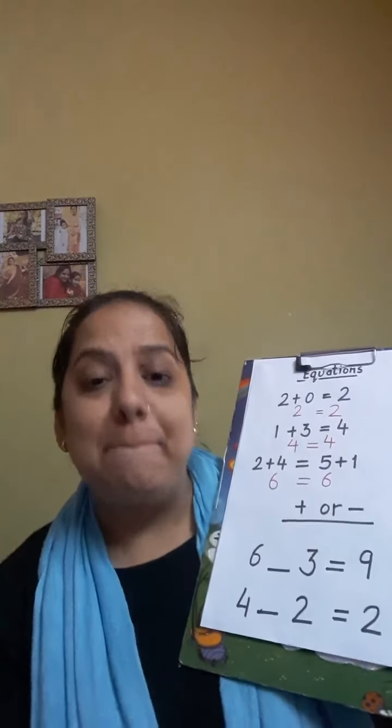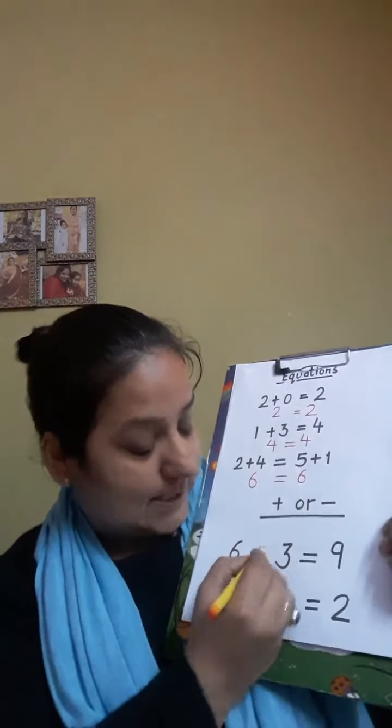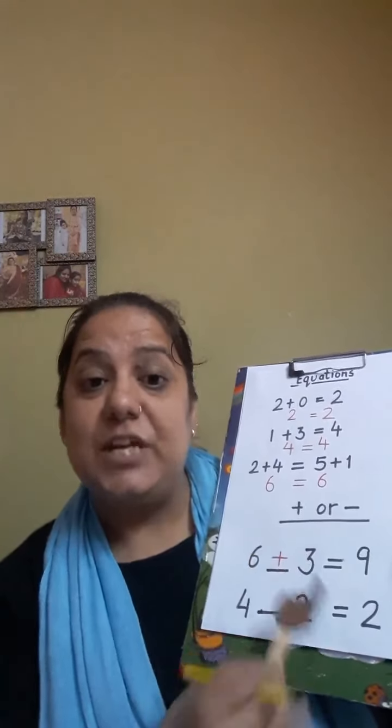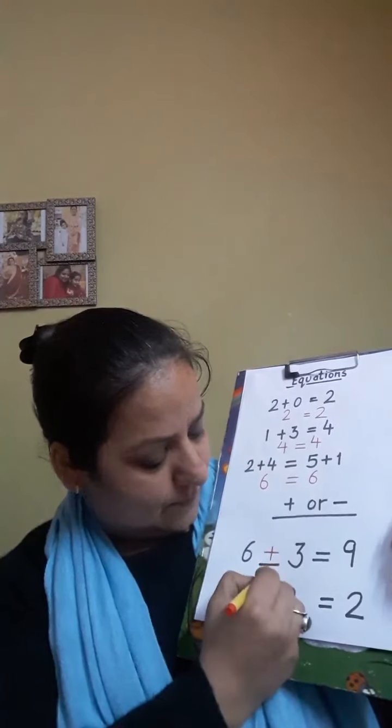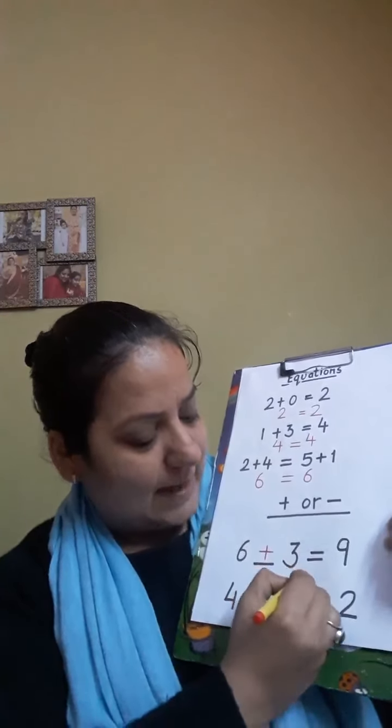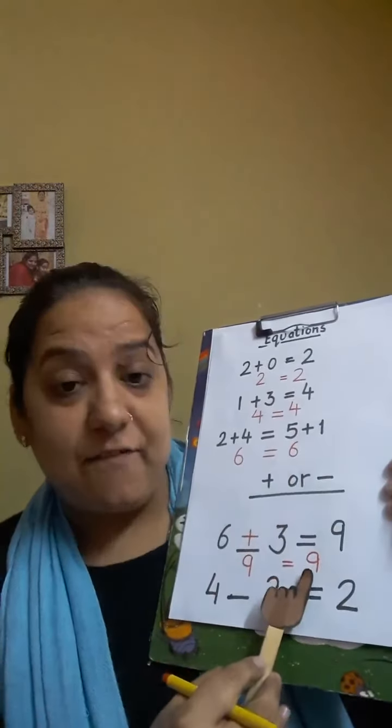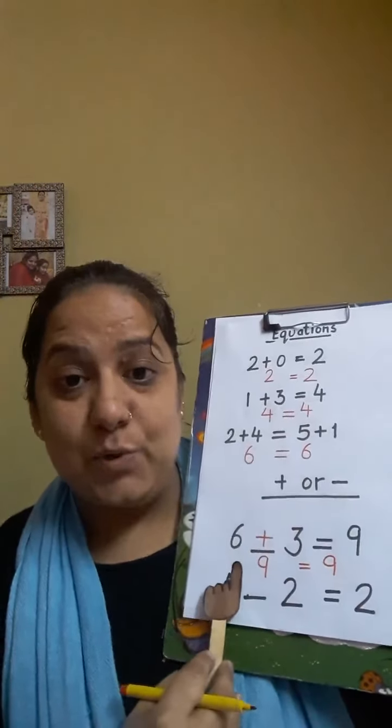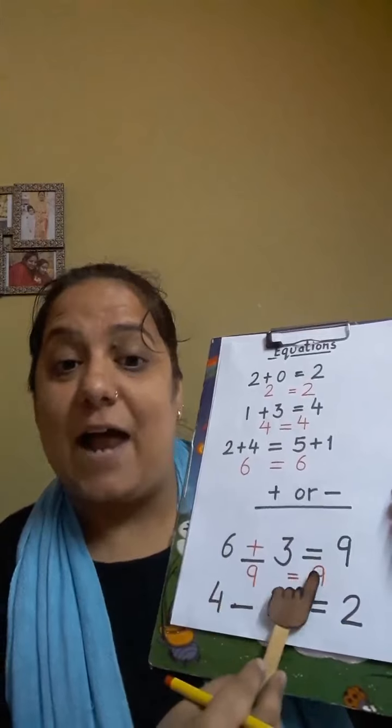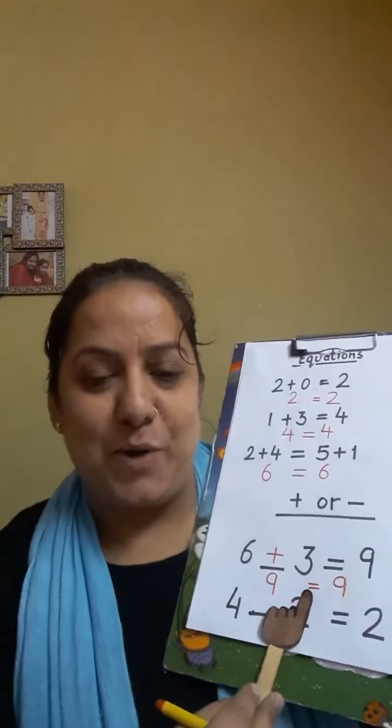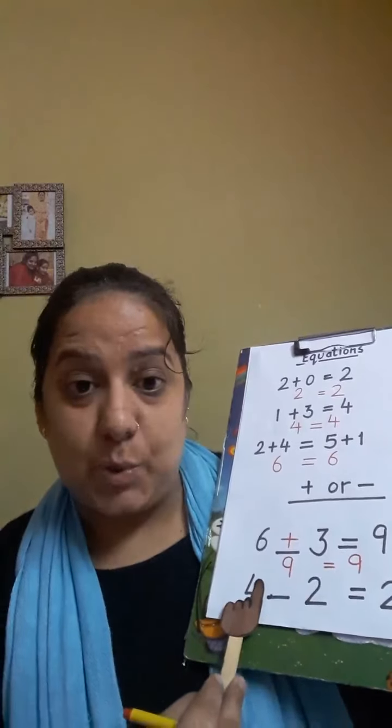So if we add both these 6 plus 3, we get 9. And here we have 9. So the value left hand side and right hand side are equal. Very good. So let's see the next equation.